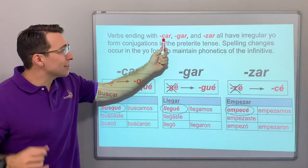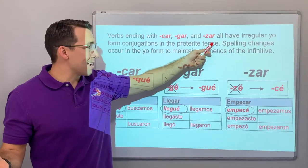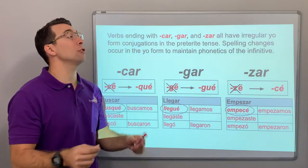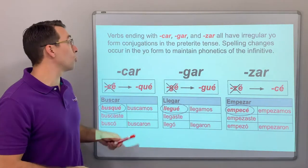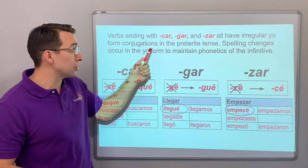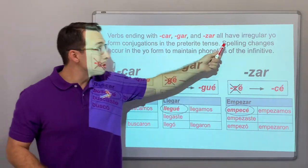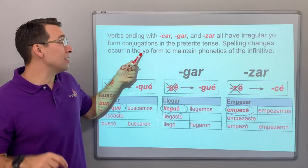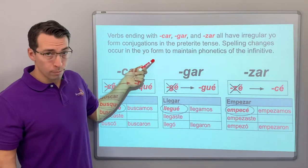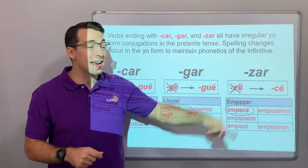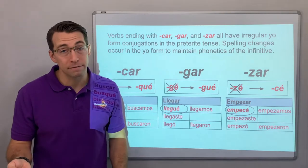Verbs ending with KAD, GAD, or ZAD all have irregular yo-form conjugations in the preterite tense. Spelling changes occur in the yo-form to maintain the phonetics of the infinitive.